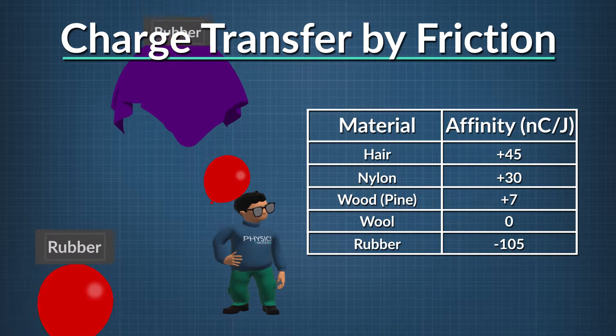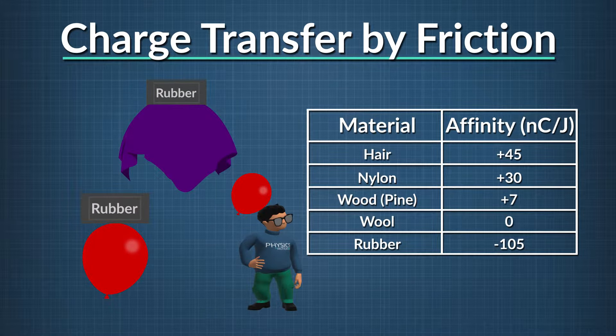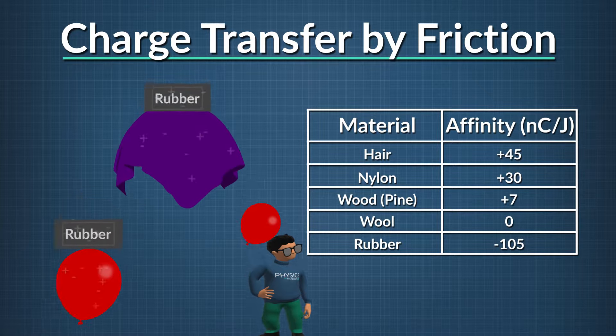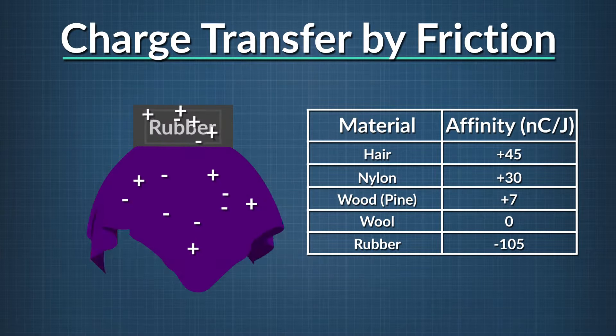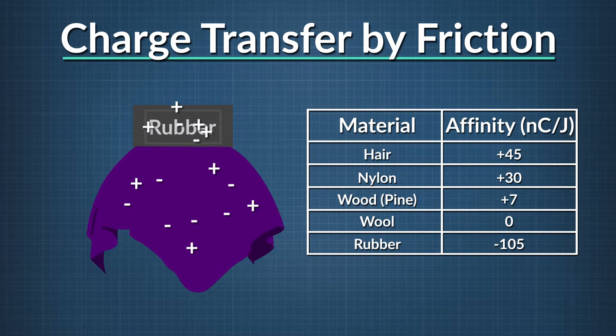Which materials do electrons move to in these friction events? Electrons tend to go to whichever material has the strongest affinity for them. So when we rub wool and rubber together, wool accepts electrons more easily and takes on negative charge. The law of conservation of charge tells us that charge cannot be created or destroyed. It is just transferred from one place to another.